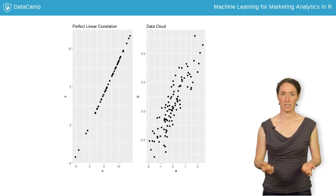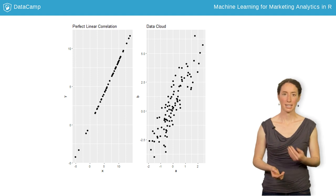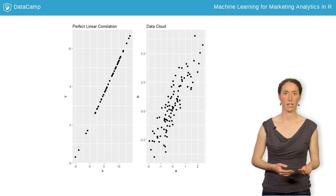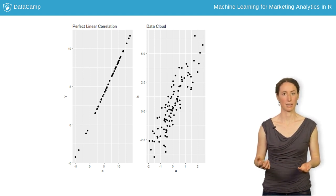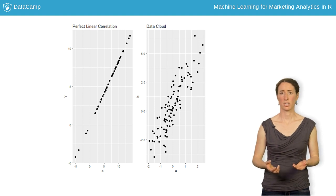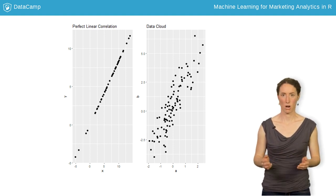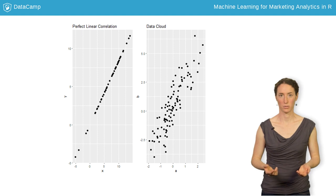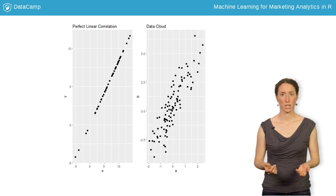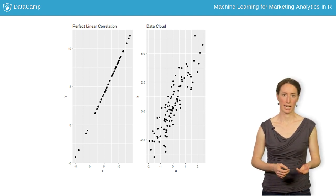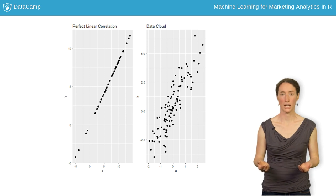In reality, the ideal case of a perfect linear correlation where you can exactly predict y with the given value of x is very unlikely. Most of the time the data points are scattered around in the form of a cloud. For this, we determine the direction of the relationship between x and y by fitting a straight line through the cloud.